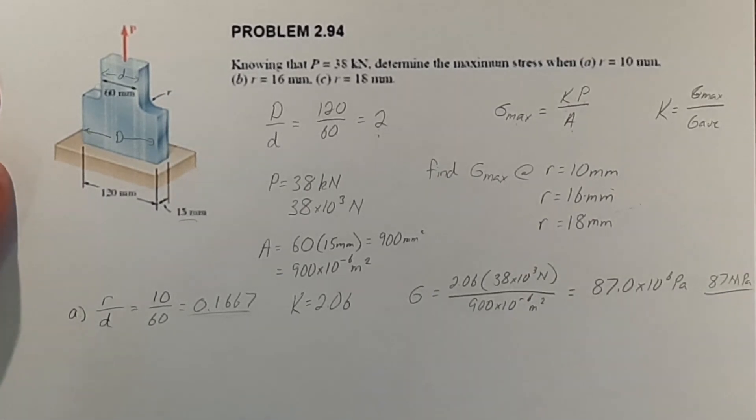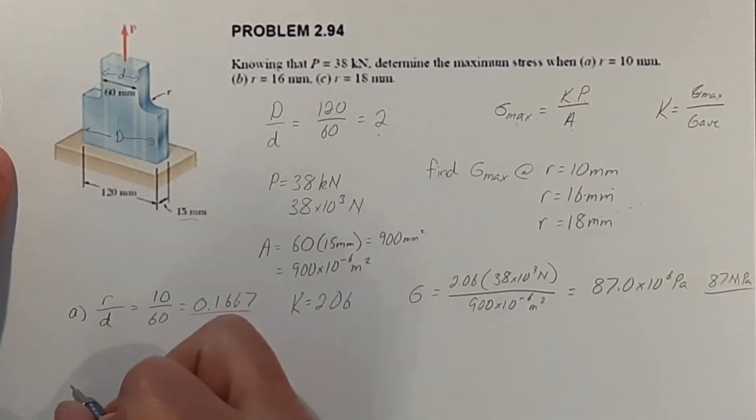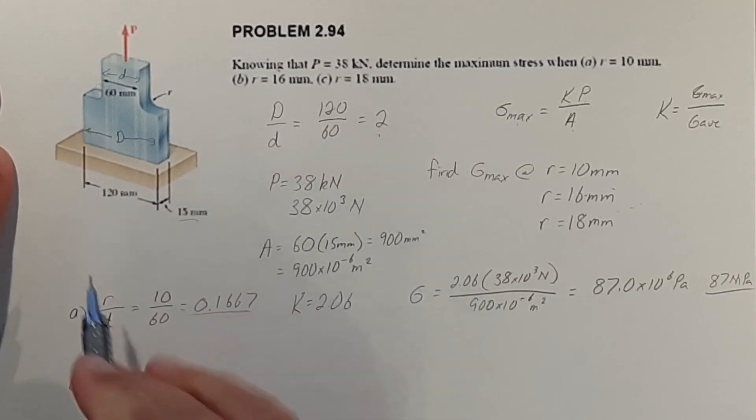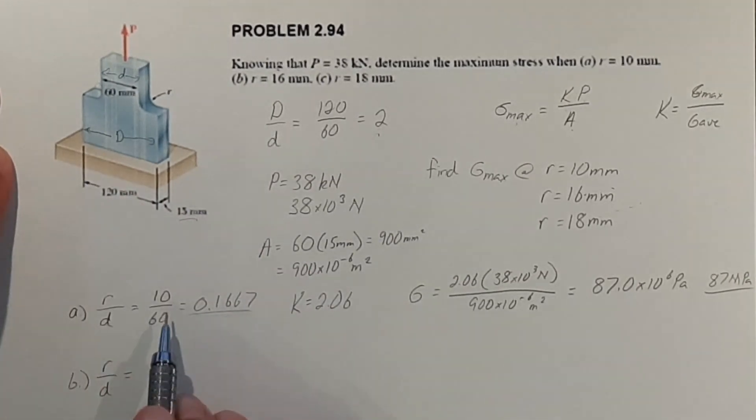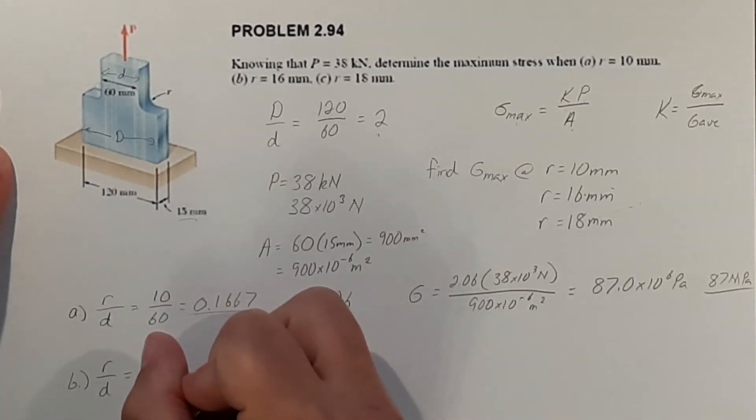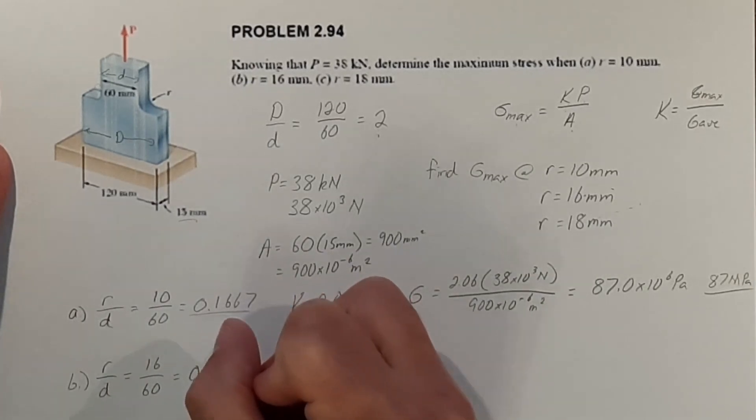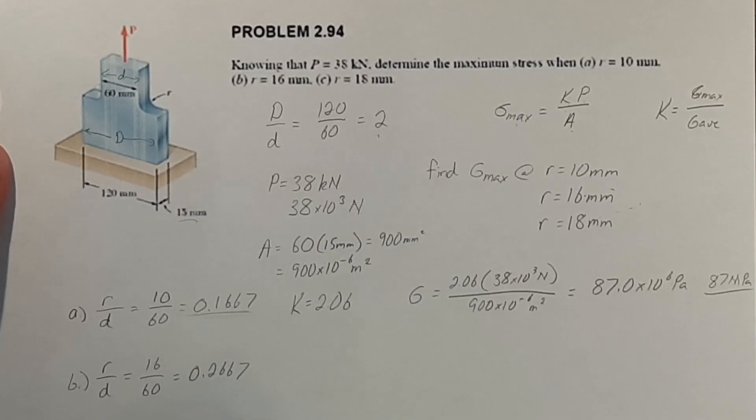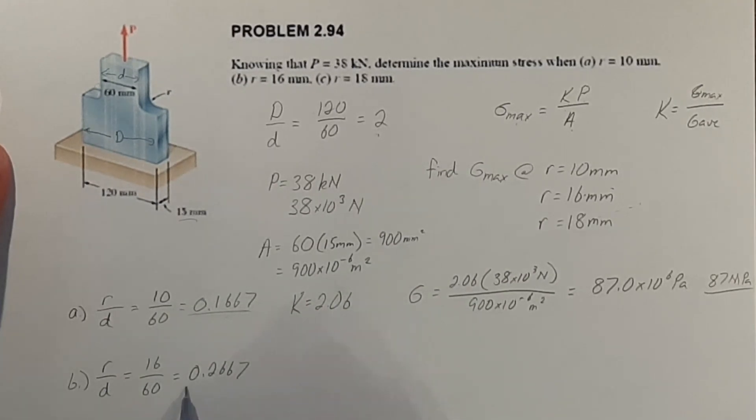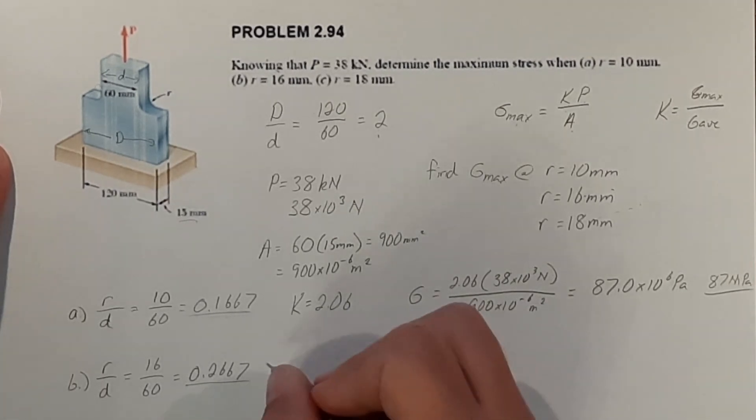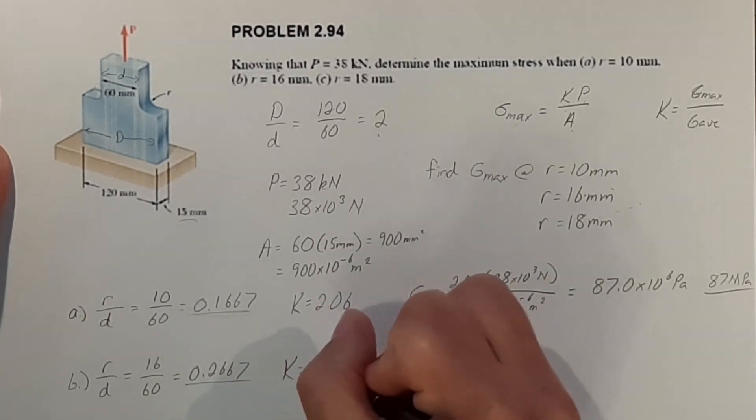All right. And the same thing goes for part B. So for 16 millimeters, we need our radius of our fillet over our little d. But now instead of 10, they want to know 16. So we've got 16 over 60, and that is equal to 0.2667. And if we go to our K value chart again, look for that number on the bottom axis, go up to our line that is labeled for 2, and we're going to find K is equal to 1.78.